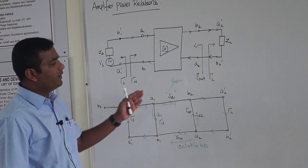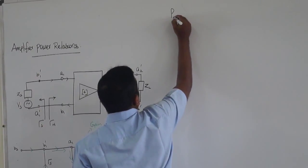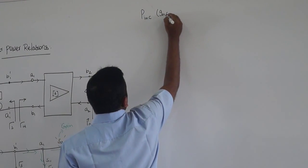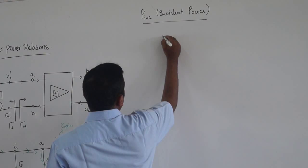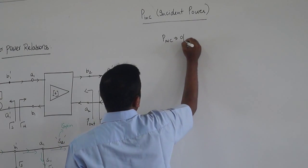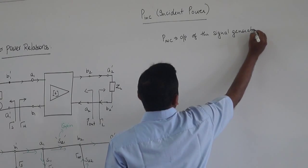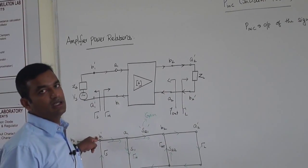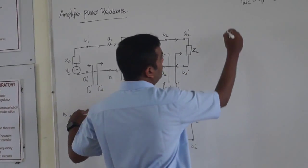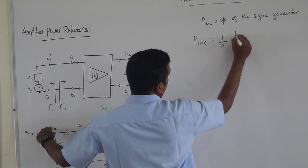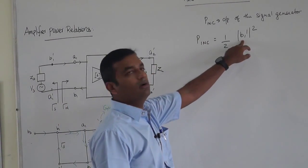Now let us estimate the various parameters of the RF amplifier. The first parameter is called incident power, P_incident. P_incident is the power at the output of the signal generator. Since B1' is the RMS voltage, P_incident equals half times |B1'|².